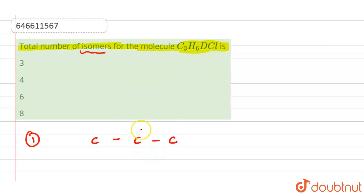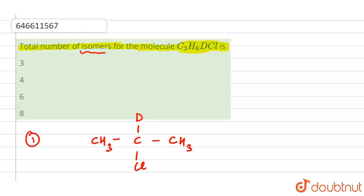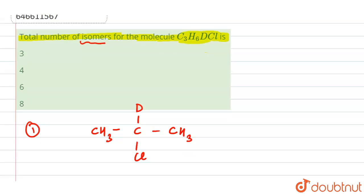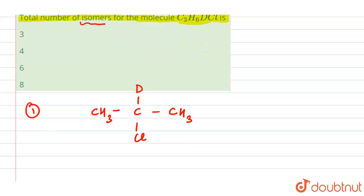For the first structure, we have a three-carbon chain (C-C-C) with D and Cl attached to the middle carbon, and CH₃ groups on either side. This gives us our first possible structure.